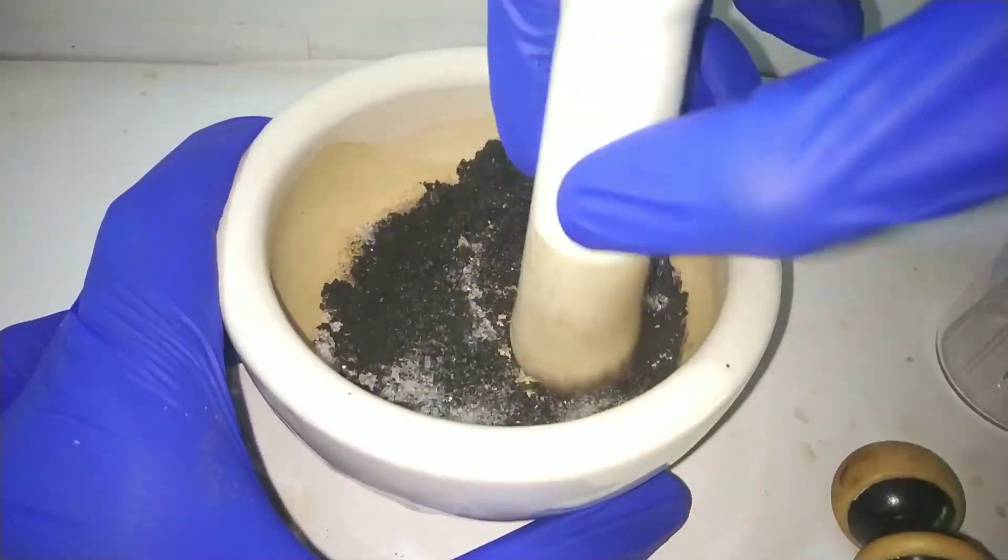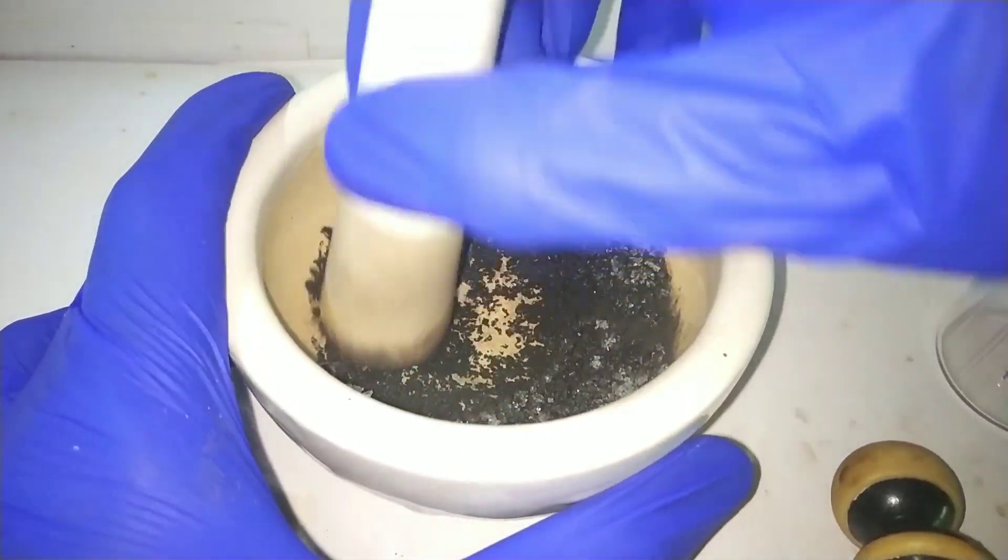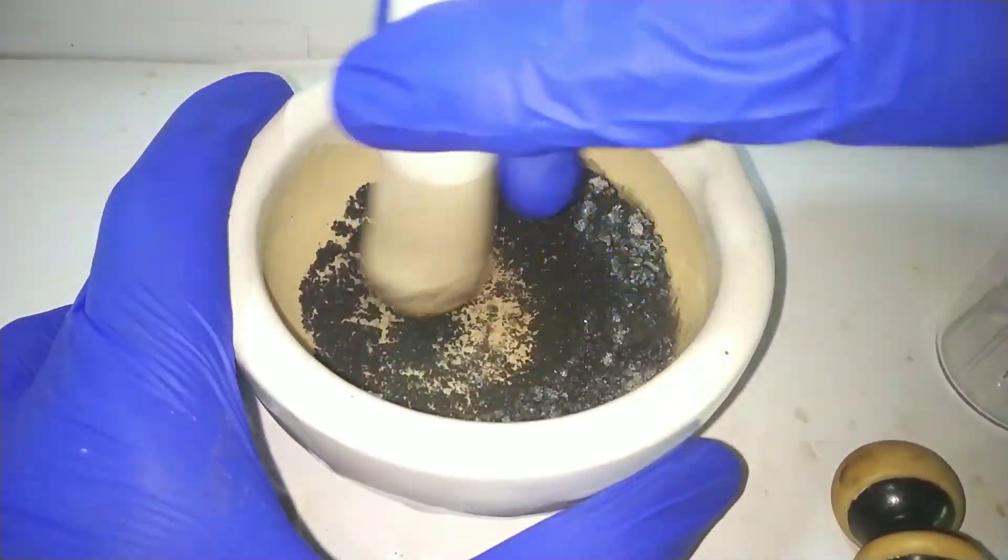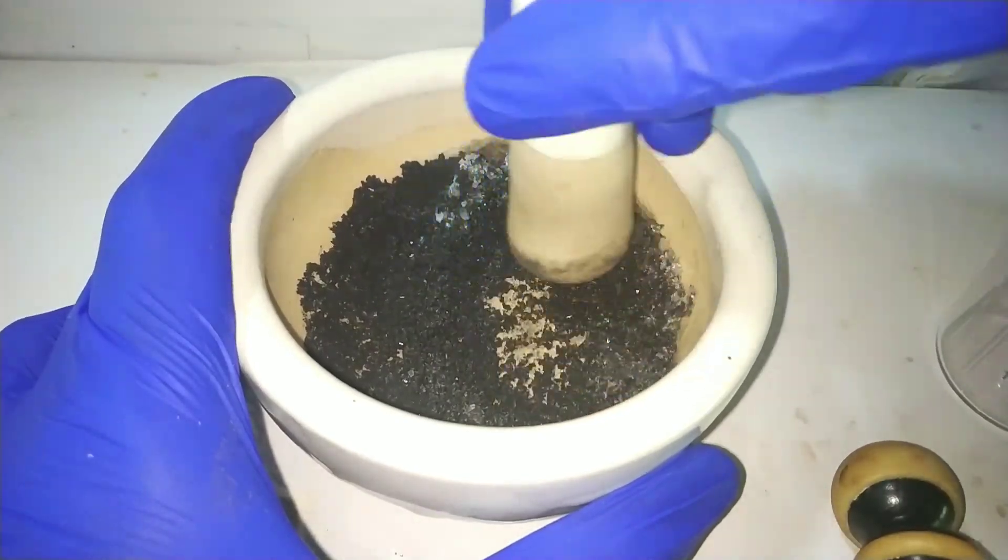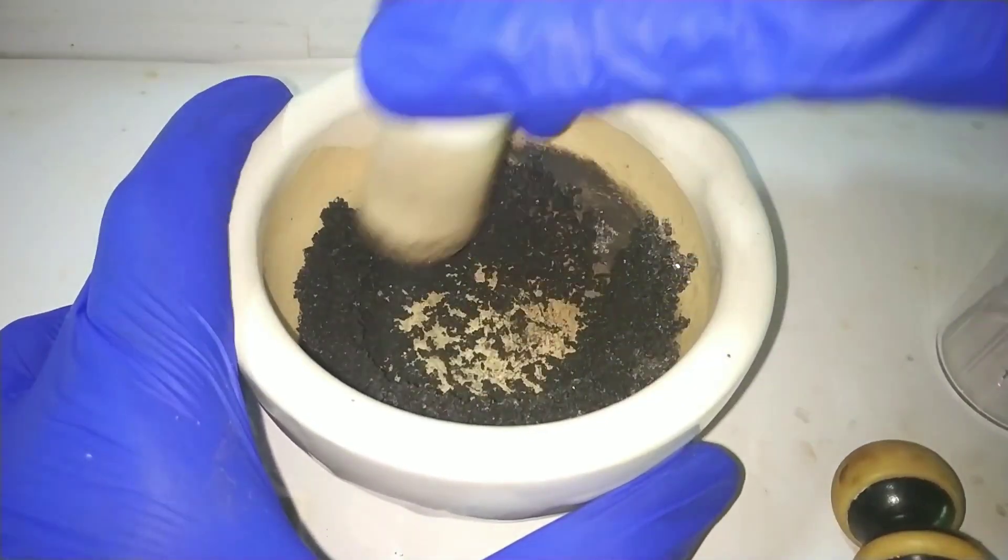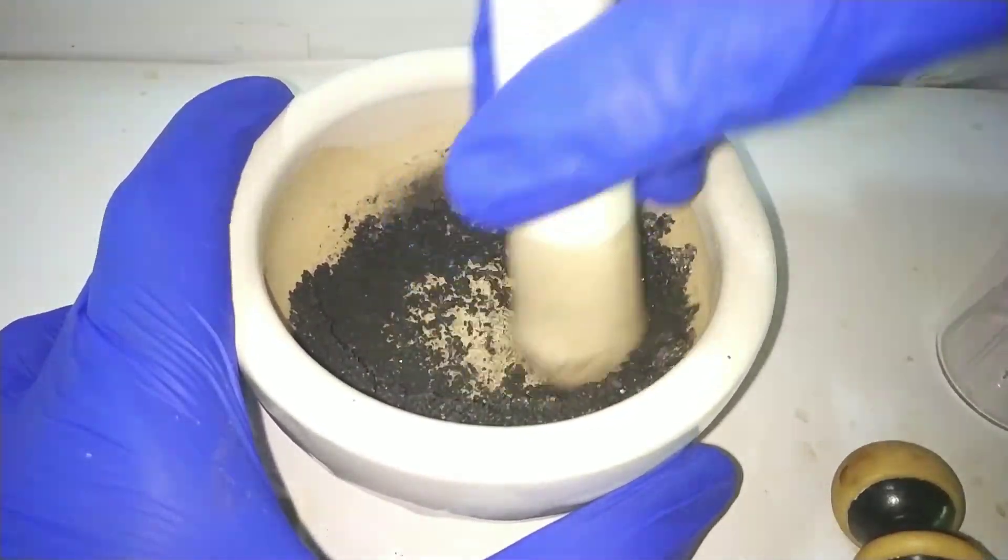With the help of a pestle, grind them together to a uniform mixture which will be black in color due to the manganese dioxide. Grind them by a rotational motion of the pestle and not by ramming the pestle on the compound, as it can cause spillage.